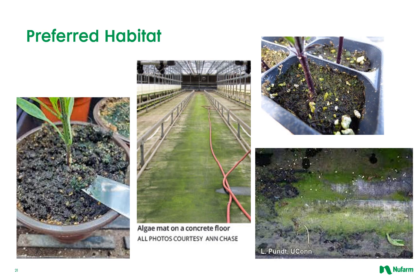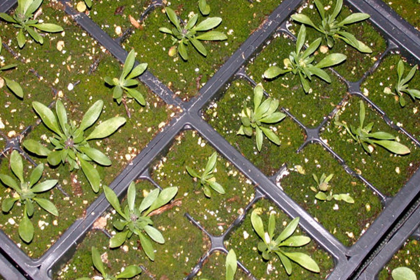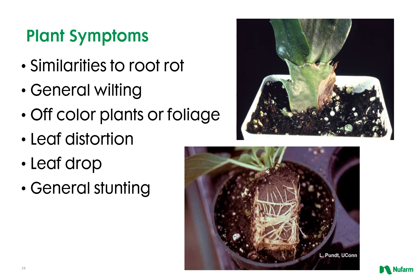Here are some examples of fungus gnat and shore fly preferred habitat: wet soil with organic matter and algae-covered surfaces. Some of the plant symptoms that can result from fungus gnat infestations can be similar to root rot. They can cause general wilting, off-color foliage, leaf distortion and/or leaf drop, and general stunting. Here we see fungus gnat larva feeding on poinsettia roots and some damage to zygocactus.